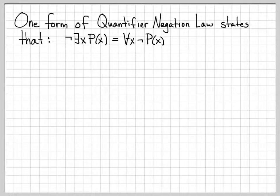All right, we're going to investigate the quantifier negation law and do a little manipulation to actually prove the second form. One form of the quantifier negation law says that not there exists x P of x is equal to for all x not P of x. So that's one form of the law.